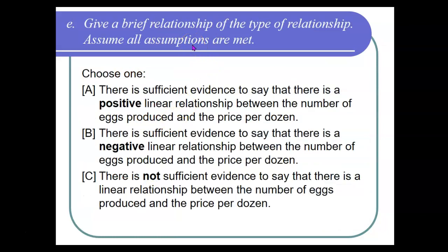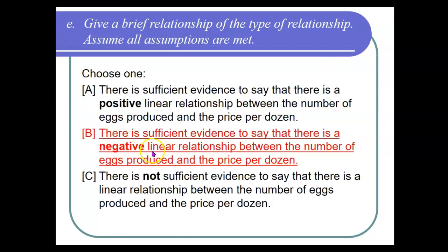Step E: give a brief description of the type of relationship, assuming all assumptions are met. Since we rejected the null hypothesis, there is sufficient evidence to say there is a linear relationship — so it's either positive or negative. Since r was a negative number (negative 0.8 something), it's a negative relationship. Our conclusion: there is sufficient evidence to say there is a negative linear relationship between the number of eggs produced and the price per dozen.